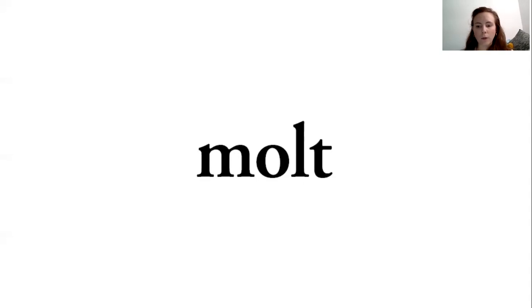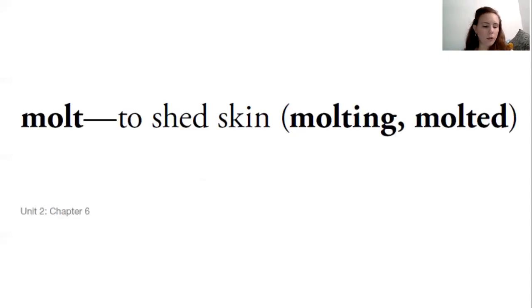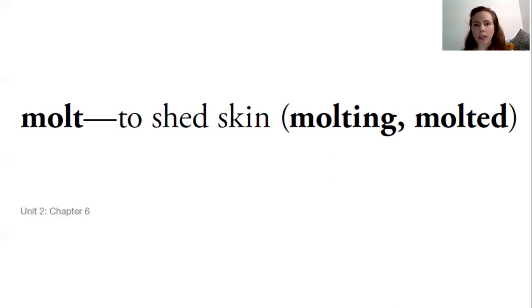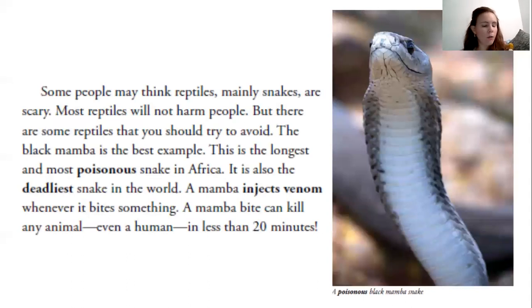Another line for another word. This word is molt: M-O-L-T. Only one syllable in molt — that long O sound. Molt means to shed skin. If the animal is doing it right now, it is molting — that's suffix I-N-G. If it is already done, it has molted — E-D at the end. So that tells us molt is a verb; it's an action word. And that is it — those were our words.